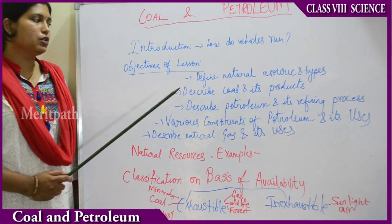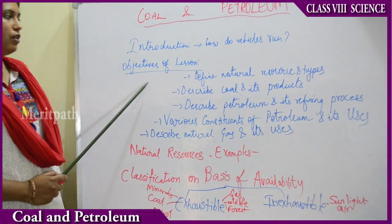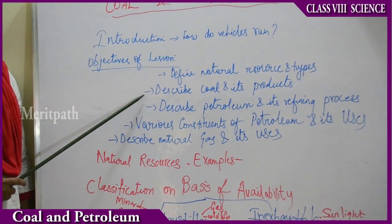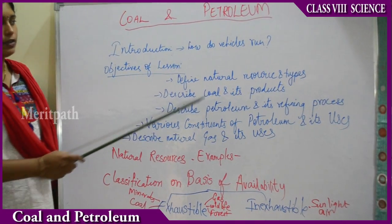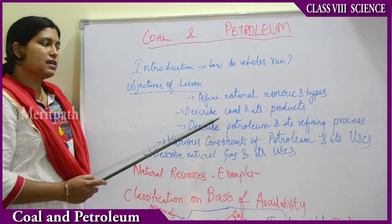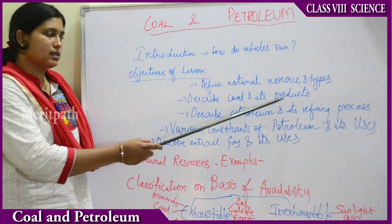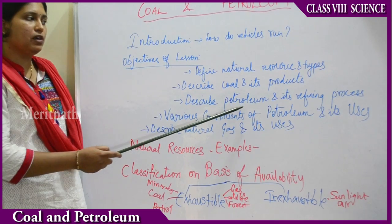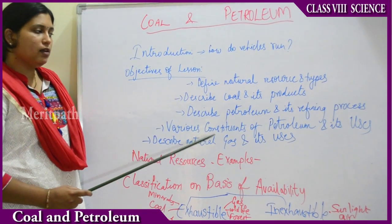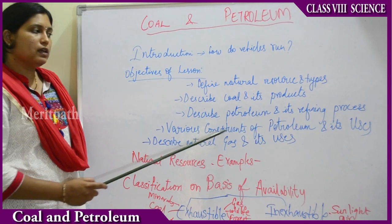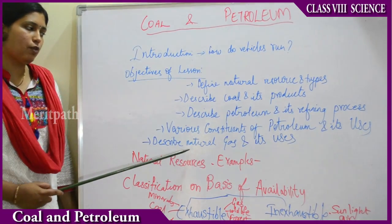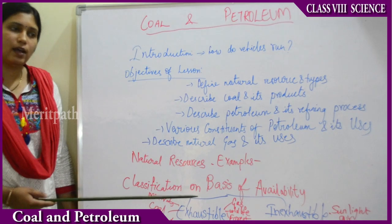After completion of these lessons, what are the objectives? You will be able to define natural resources and their types. You will describe coal and its products. You will describe petroleum and its refining process, the various constituents of petroleum and its uses, and also what natural gas is and its uses.